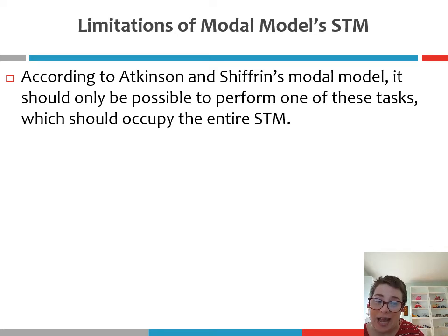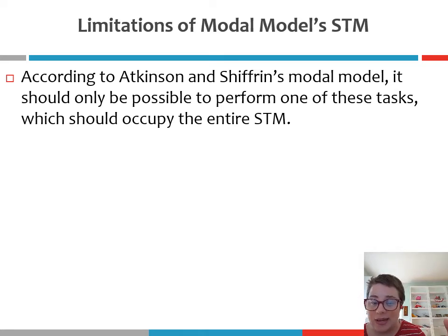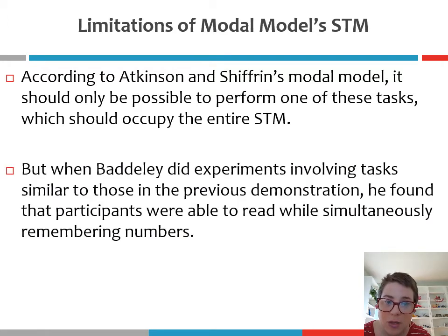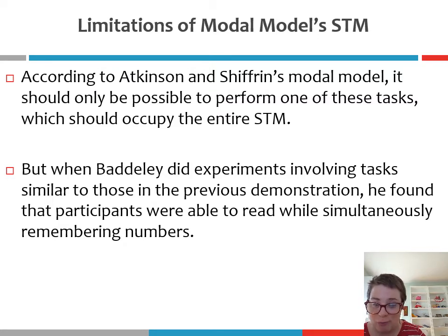But according to Atkinson and Shiffrin's modal model, it should only be possible to perform one of these tasks, as one task would occupy the entirety of our short-term memory store. Remember, according to George Miller we can store between five and nine units of information, and more contemporary research suggests we can only hold four units at a time. So it shouldn't be possible to hold four numbers in mind while also doing something more complex like reading or solving a word problem. Yet when Baddeley and other cognitive psychologists ran experiments similar to this demonstration, participants were very easily able to do both.